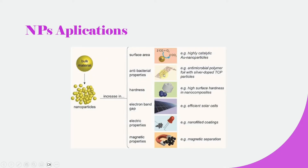Similarly, nanoparticles also have improved antibacterial properties — for example, antimicrobial polymer foil with silver-doped TCP particles. Regarding hardness, nanoparticles have improved hardness, for example high surface hardness in nanocomposites. Similarly, they have improved electron band gap, as seen in efficient solar cells.